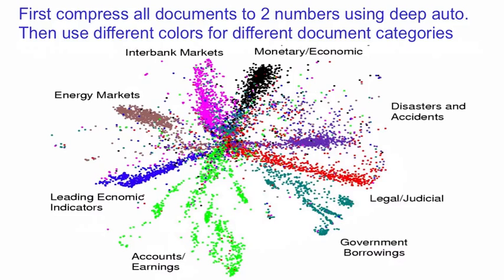A visual display like this could be very useful. For example, if you saw that one of those green dots was the accounts and earnings report from Enron, you probably wouldn't want to buy shares in a company that had a green dot nearby.